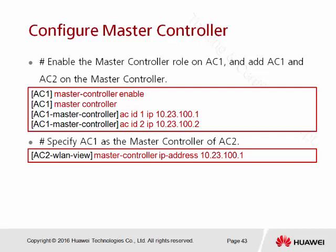Don't forget — on AC number two, if you never tell AC two who is the master controller, AC two will never form the AC tunnel with AC one. So you have to configure it here. Make sure AC two is using this command, and this command can only be enabled on the double-length view. The command to use is 'master controller' followed by a space and the IP address of AC one.